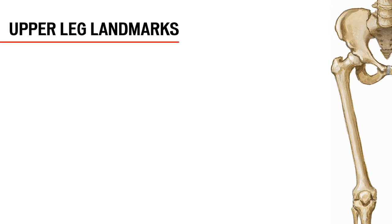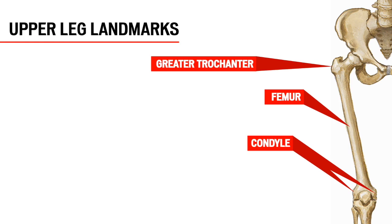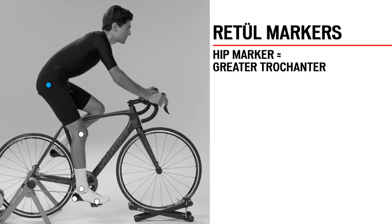Now we will move up the leg towards the hip. The condyle is the bulbous bony structure on the inside and outside of the knee. These two sides are typically not symmetrical — the inside medial condyle is usually larger and longer than the outside lateral condyle. This asymmetry creates an imperfect hinge as the knee moves through flexion and extension. The femur is usually the largest bone in the body and is our primary cycling lever. The greater trochanter is the large rounded bone mass on the side of the hip and is the approximate center of rotation of the hip. The hip marker is placed on the center of the greater trochanter.